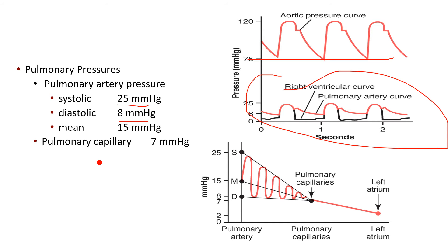The right ventricle is pretty thin and does not respond too well to increases in afterload. Because of that, we want to keep the pressures in the pulmonary artery fairly low. The right ventricle is very afterload-sensitive and does not accommodate large increases in afterload as the left ventricle does. If pulmonary pressure is too high, we can cause the right ventricle to fail.